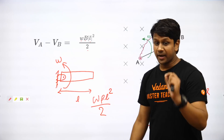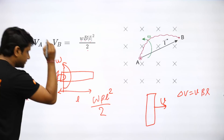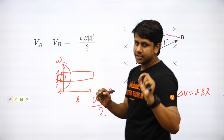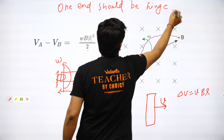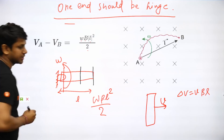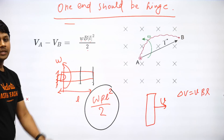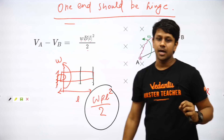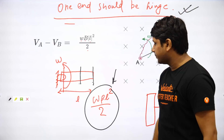A very important point when applying this formula: one of the ends must be the hinge. Write this in big letters — ONE END SHOULD BE HINGE — only then apply this formula, otherwise it will not work. If you are asked for the potential difference between two points neither of which is the hinge, you cannot directly apply ωBL²/2 between those two points.